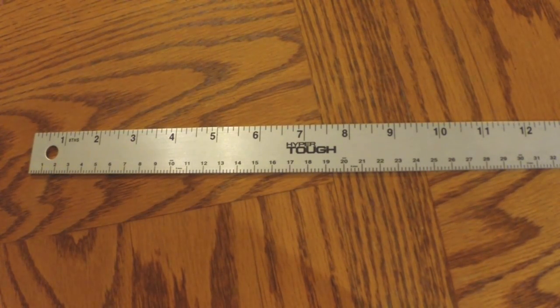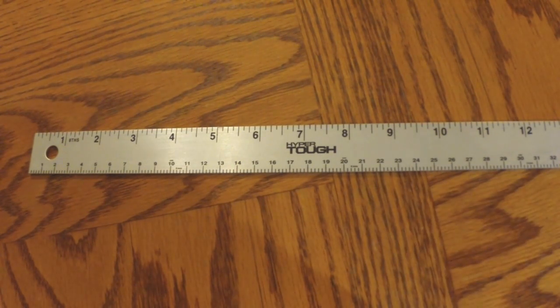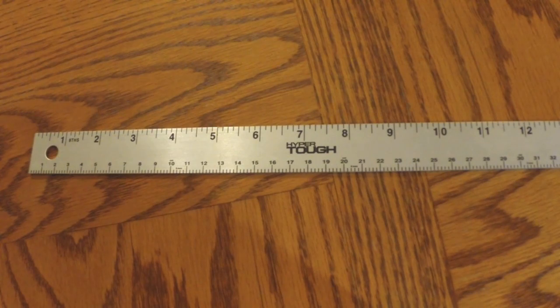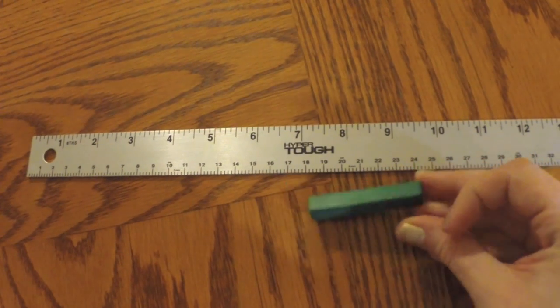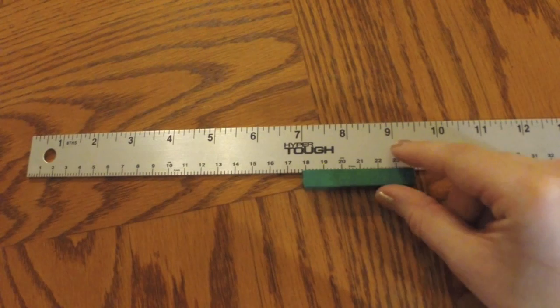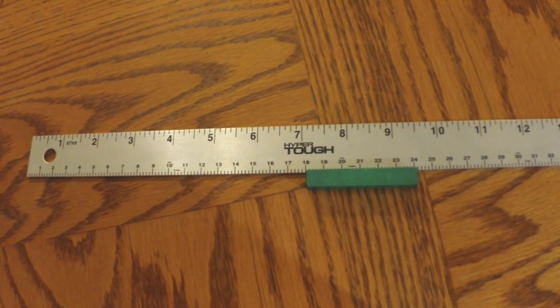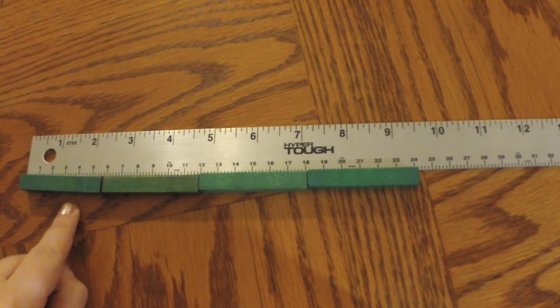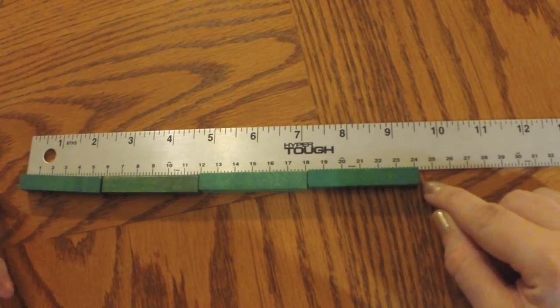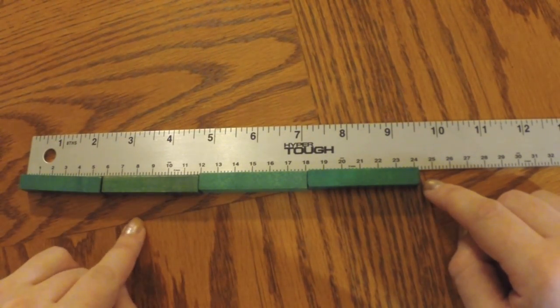So you can also use Cuisenaire rods when you're looking at division problems, which is really cool. So let's start with looking at a ruler, which I have out right here. And let's take the problem twenty-four divided by six. So what you're going to do is you're going to take your rod that is six units long. And you're going to start it at the twenty-four so that the edge matches up at twenty-four. And you're going to see how many different Cuisenaire rods or groups of six you can fit before you get down to zero. And awesome. So as you can see here, you can fit four groups of six between twenty-four and zero. So twenty-four divided by six is four.